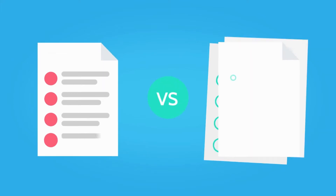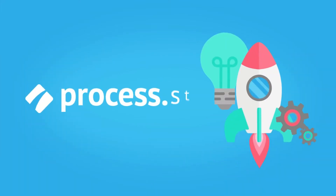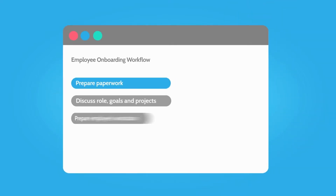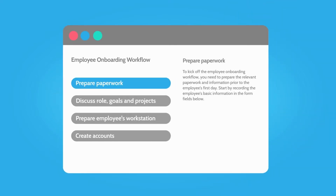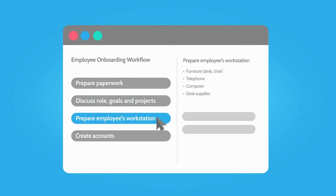The difference between workflows and workflow runs is an important concept when getting started with Process Street. First, you have a process workflow, which is a set of instructions on how to complete tasks, like a blueprint. Workflows lay out exactly how a process is supposed to be completed.